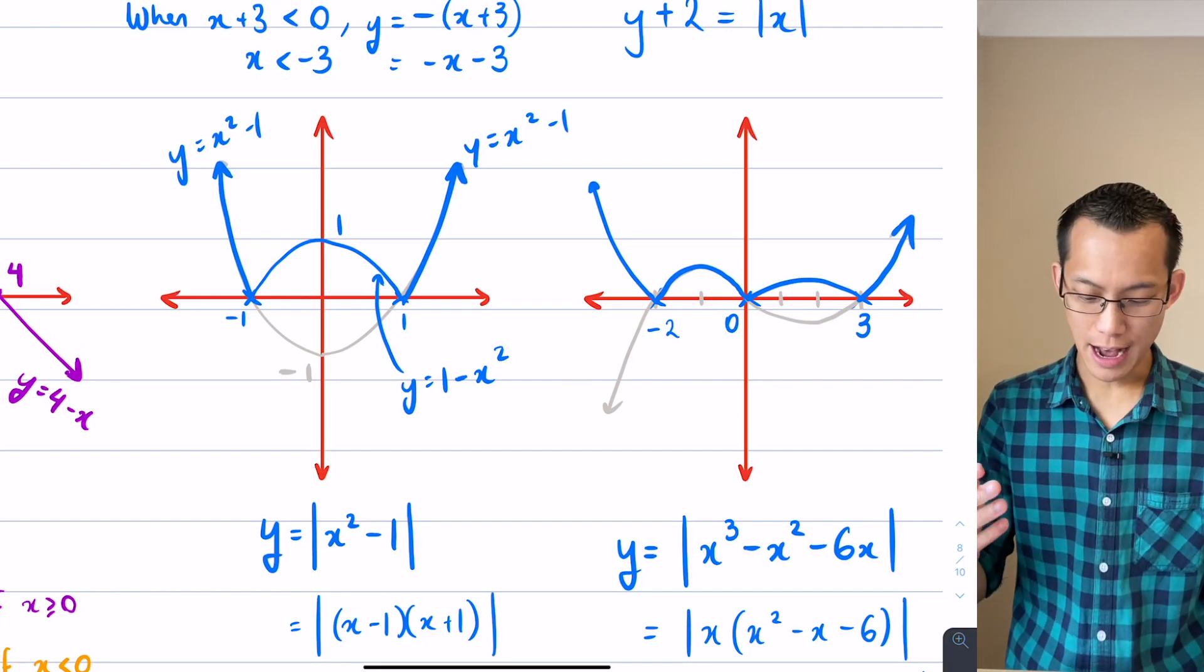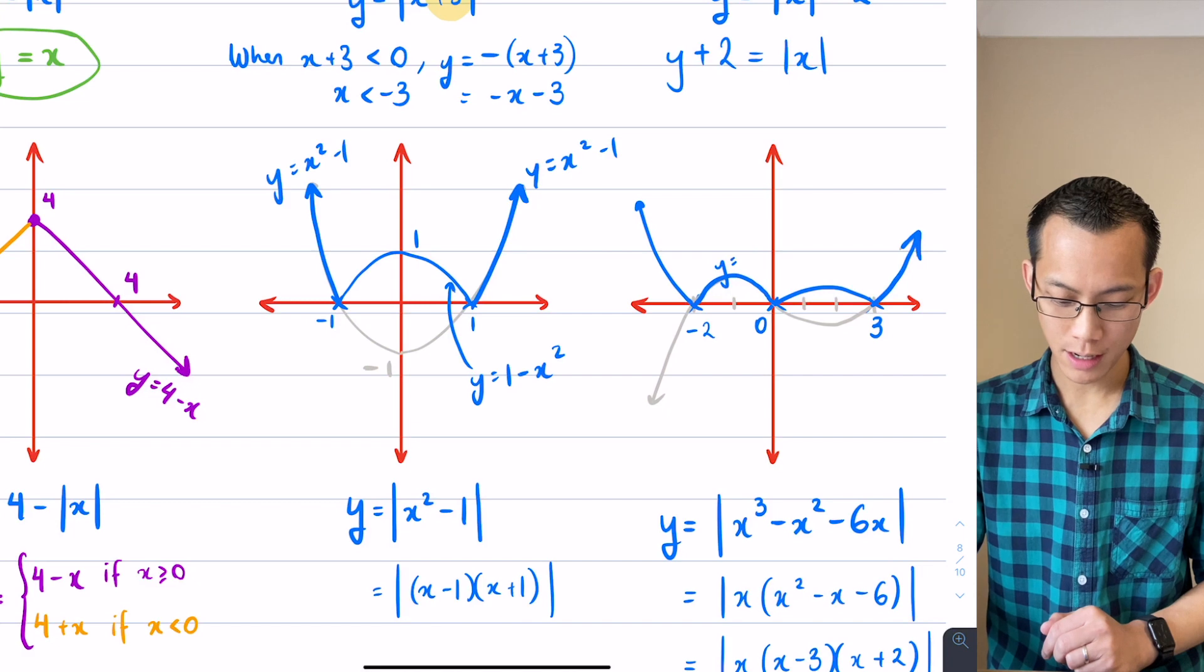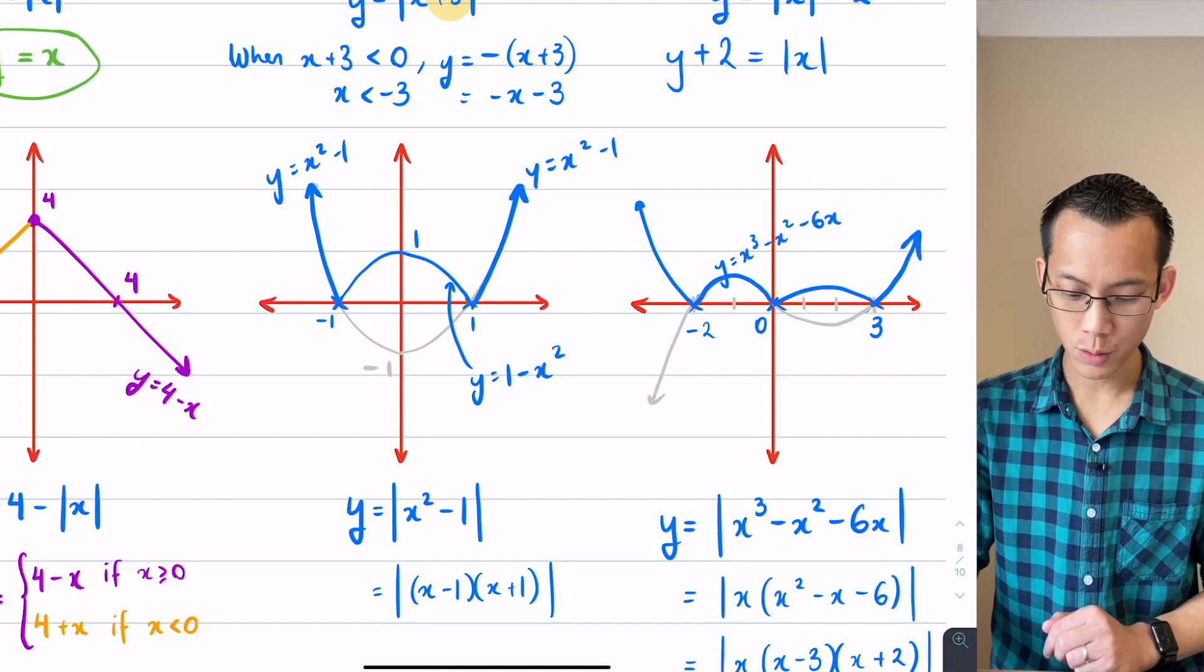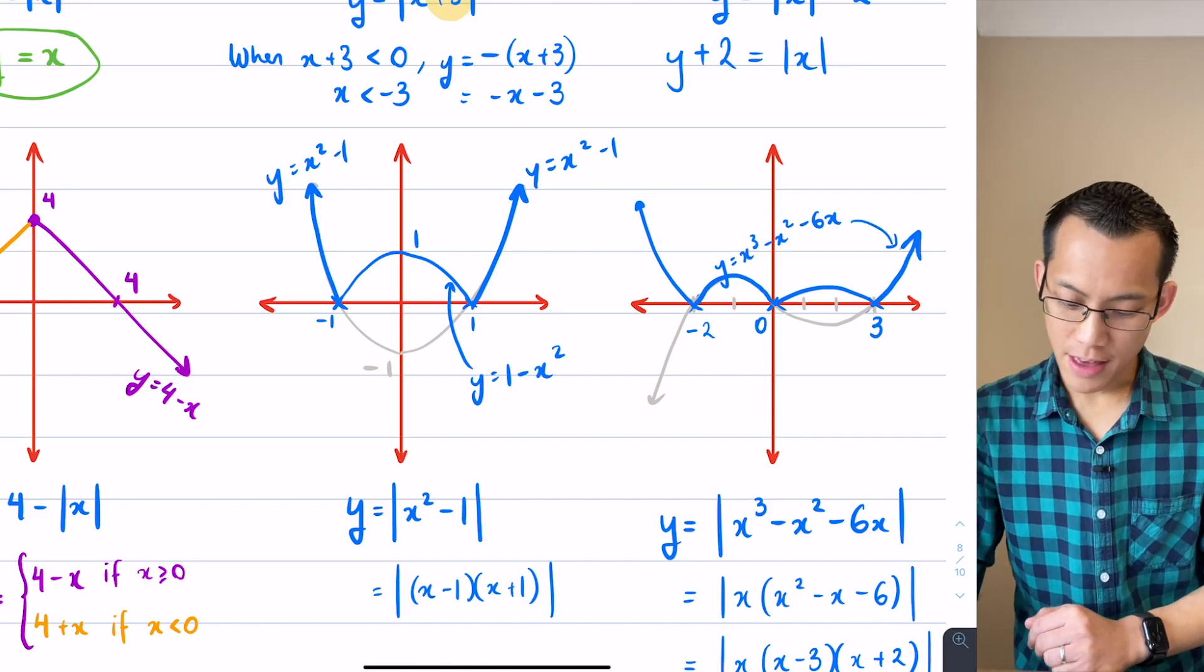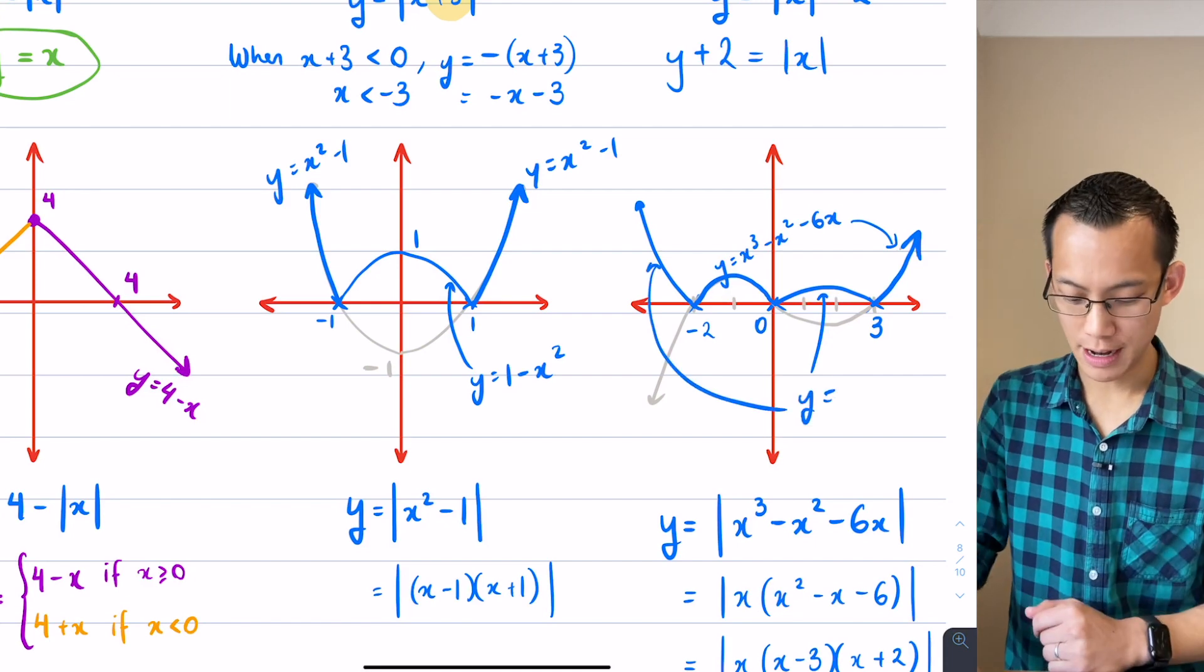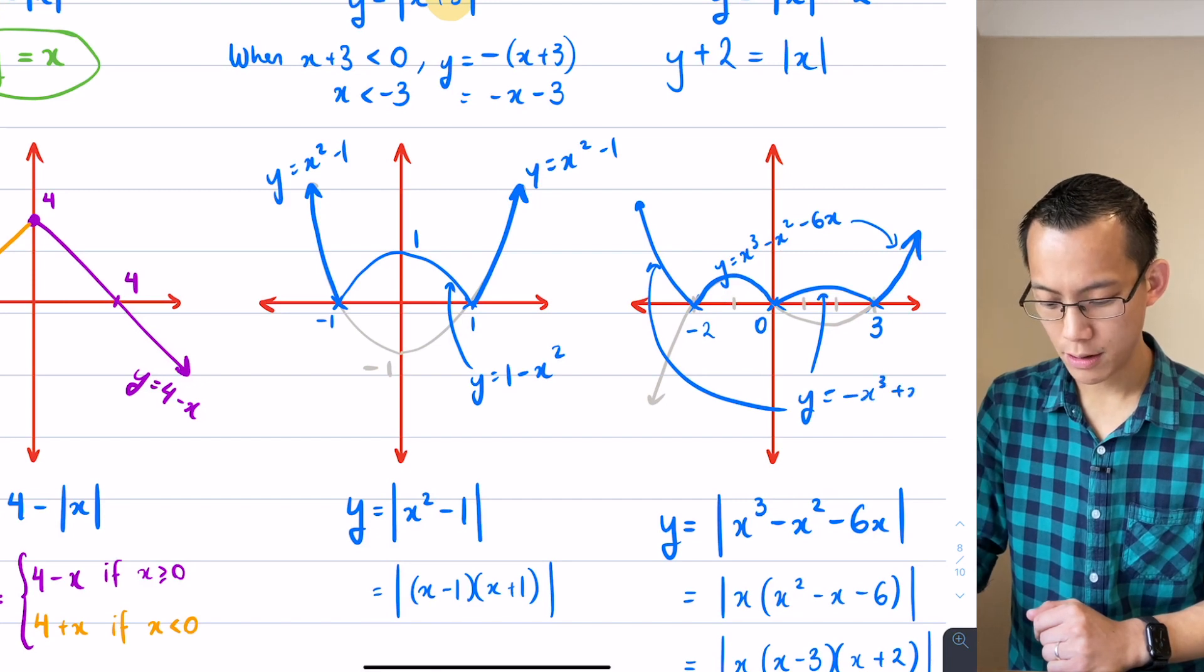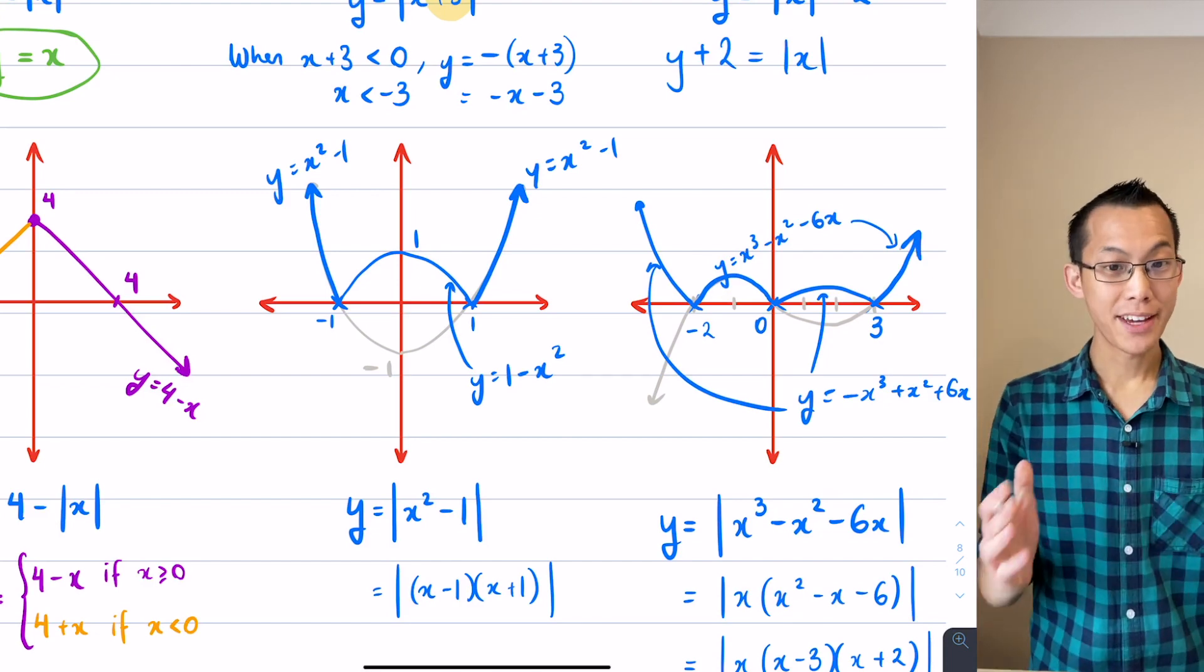Like before, I can see the parts which didn't change—there's this one here which is x cubed minus x squared minus 6x, which applies to that little part and also the part here. Then you've got the parts that I had to reflect, these guys, and I'm going to label them with the appropriate equation, which in this case is negative x cubed plus x squared plus 6x.